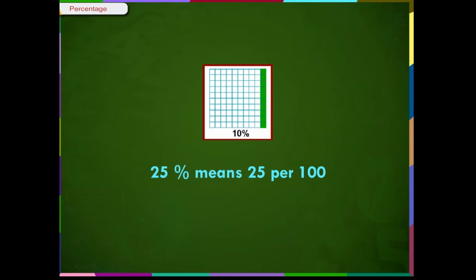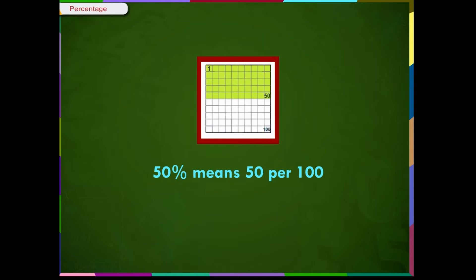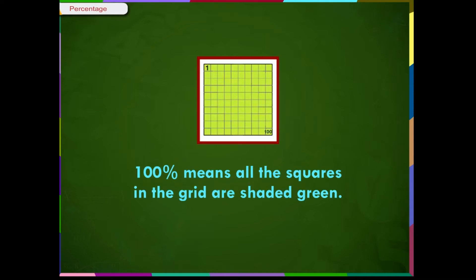Similarly, 10% means ten per hundred, 25% means twenty-five per hundred. Twenty-five percent of this grid is shaded green. Fifty percent means fifty per hundred. Fifty percent of this grid is shaded green. One hundred percent means all the squares in the grid are shaded green.